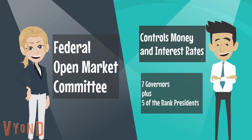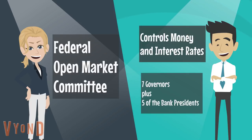The Federal Open Market Committee is the entity in the Fed responsible for controlling the money supply and interest rates. It is the seven members of the Board of Governors, plus, on a rotating basis, five of the bank presidents. New York always serves because that's where bonds are. The other 11 districts rotate on and off four at a time, so there's a diversity of opinion and the whole country gets represented.